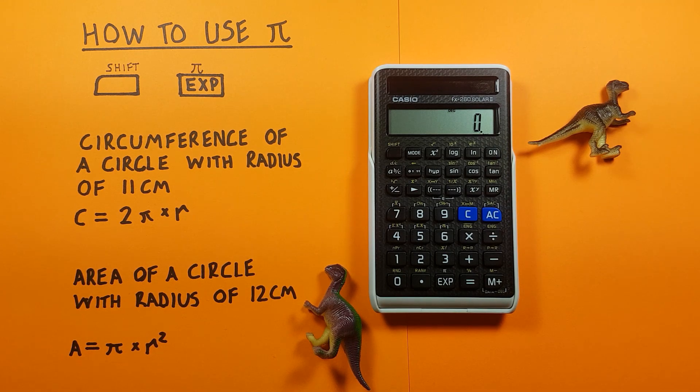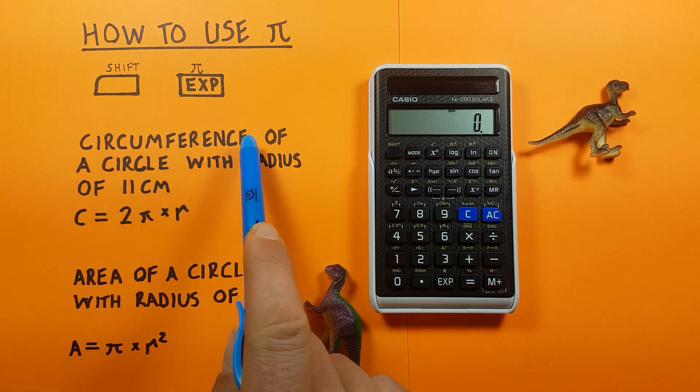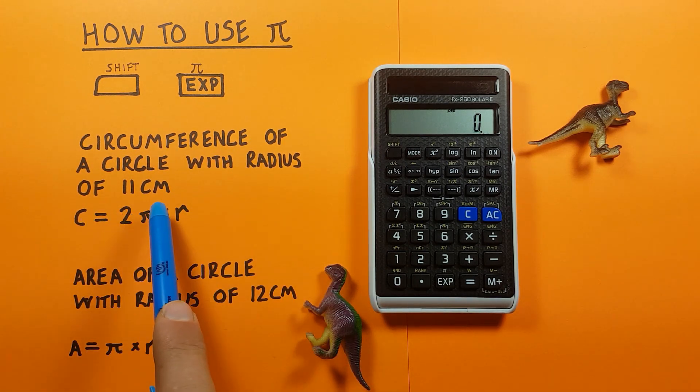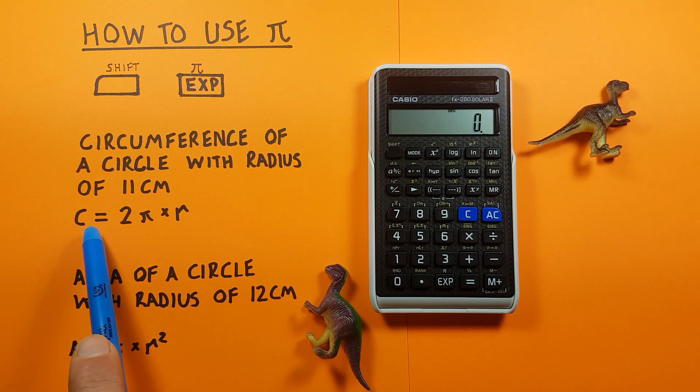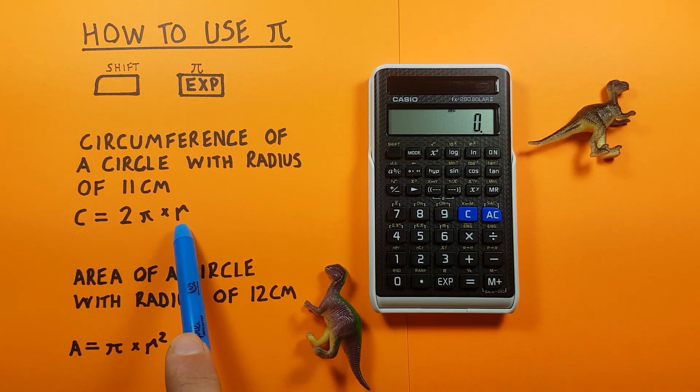So if you want to use Pi in a calculation, like for example finding the circumference of a circle with the radius of 11 centimeters, you can do it like this. We already have the formula for the circumference which is 2 Pi times R.